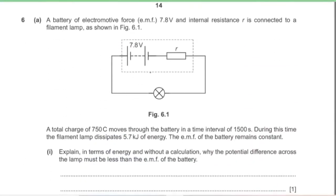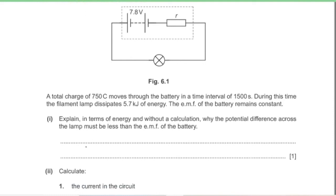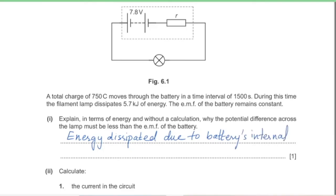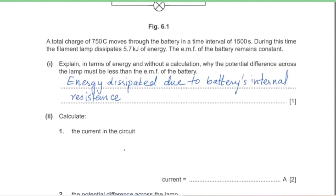Question 6, part A: a battery of EMF 7.8 V and internal resistance r is connected to a filament lamp. Total charge of 750 C moves through the battery in 1500 s, and the lamp dissipates 5.7 kJ. Part 1: explain why the potential difference across the lamp must be less than the EMF. Energy is dissipated in the battery's internal resistance, causing lost volts, so PD across the lamp is less than EMF.